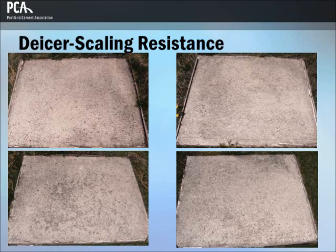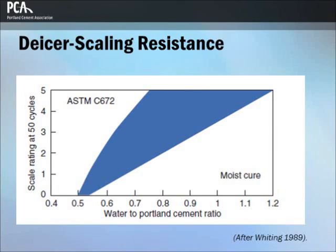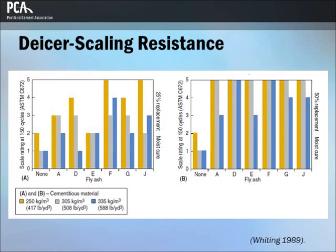This is a view of concrete slabs in the PCA outdoor test plot containing: A. fly ash, B. slag, C. calcined shale, and D. Portland cement, after 30 years of de-icer and frost exposure. These samples demonstrate the durability of concrete containing various cementitious materials. This figure shows the relationship between de-icer scaling resistance and dosage of fly ash for air-entrained concretes made with moderate to high water-cementitious materials ratios. Replacement of Portland cement with fly ash at 25% (left) and 50% (right): a scaling rate of 0 is no scaling and 5 is severe scaling.